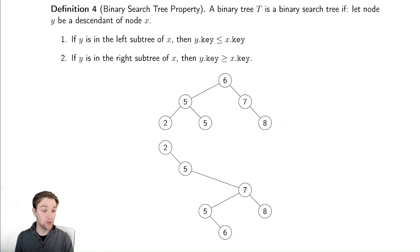So let's check that for this problem. Is everything in this left subtree less than six? Yes. And this works recursively. Is everything in this left subtree less than or equal to five? Yes.